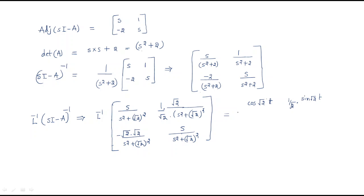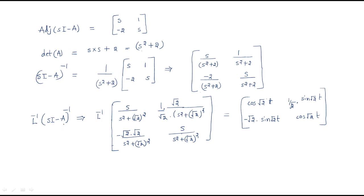Continuing the Laplace inverse: -√2·√2/(s²+(√2)²) → -√2·sin(√2·t), and the final element s/(s²+(√2)²) → cos(√2·t). So the state transition matrix e^(At) = [cos(√2·t), (1/√2)sin(√2·t); -√2·sin(√2·t), cos(√2·t)].